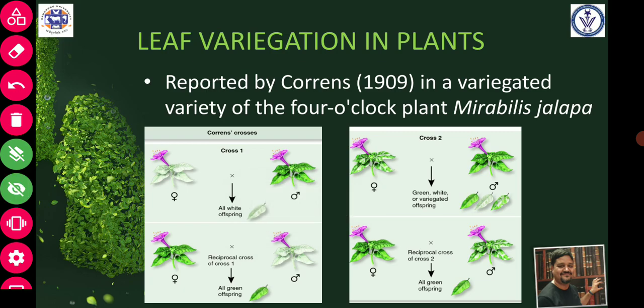The first example is plastid inheritance in the four o'clock plant, Mirabilis jalapa. It was first discovered by Carl Correns — you may remember him from our discussion of Mendel's laws. Correns observed the Mirabilis jalapa plant and found that in a single plant, there were three kinds of leaves: green color leaves, white color leaves, and variegated leaves.